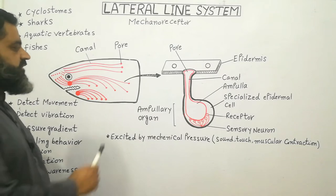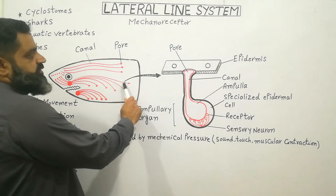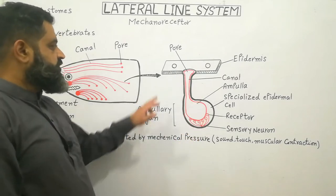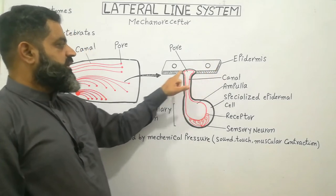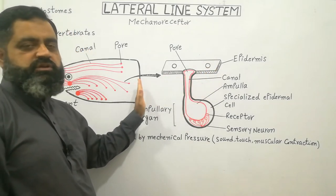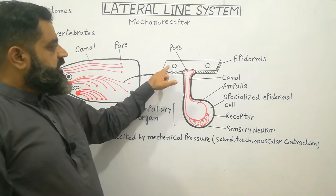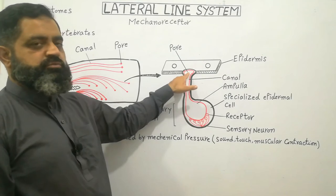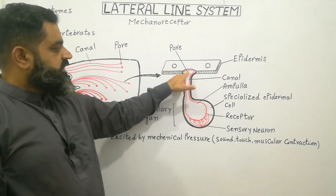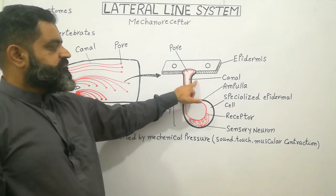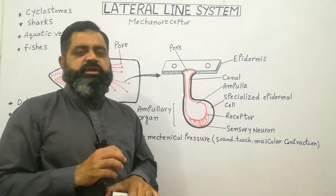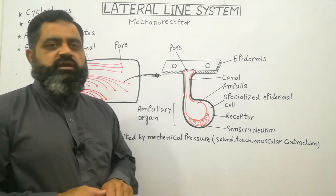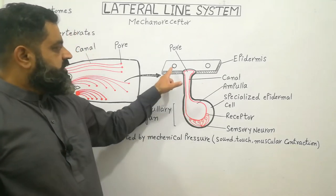The system is composed of tiny pores and canals located just beneath the epidermis. I have taken a small piece of the lateral line system and enlarged it. Here you can see the epidermis of the skin of the fish, which contains pores. Each pore leads into a canal.